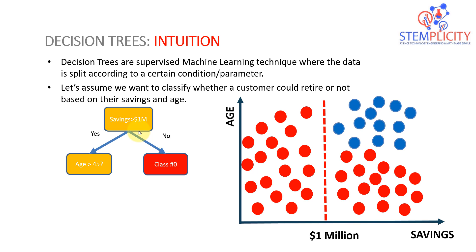That customer cannot retire at the moment, no matter their age. One million dollars is essentially the threshold for classifying whether a customer is eligible to retire. If savings are greater than one million dollars, there's a probability we can allow the customer to retire. If less than one million dollars, they are class zero — not eligible to retire.